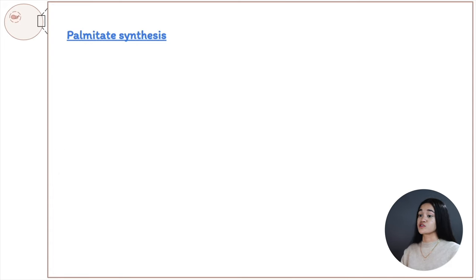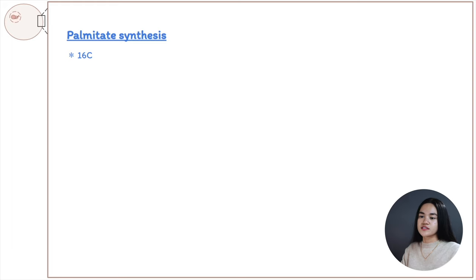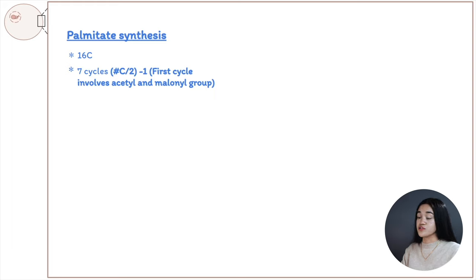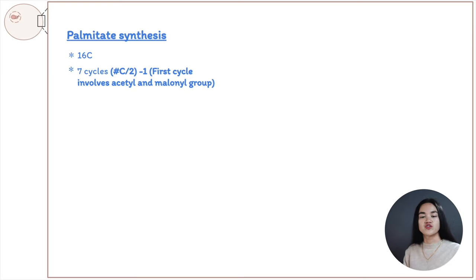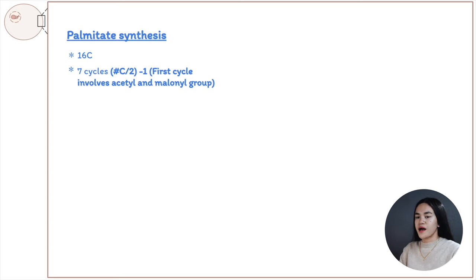Applying this to palmitate, a 16-carbon chain: palmitate undergoes seven cycles of condensation and reduction, extending the chain by two carbons each cycle, while still bound to ACP. Once palmitate is formed, it's released from ACP by thioesterase (the TE domain).